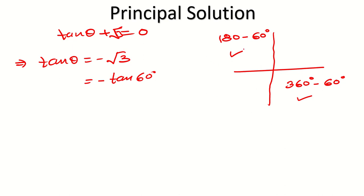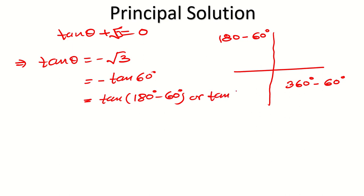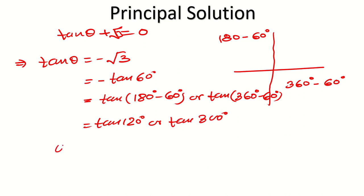Some of you may ask whether we can write 90 plus theta for the second quadrant or 270 minus theta. Yes, you can, but as I explained in another video, for 90 degrees and 270 degrees the function gets changed. So always use 180 and 360 for changing the angle, because for these two the function doesn't change. So the second quadrant gives tan 180 minus 60, and the fourth quadrant gives tan 360 minus 60 — meaning tan 120 degrees or tan 300 degrees. The principal solutions are 120 degrees and 300 degrees.